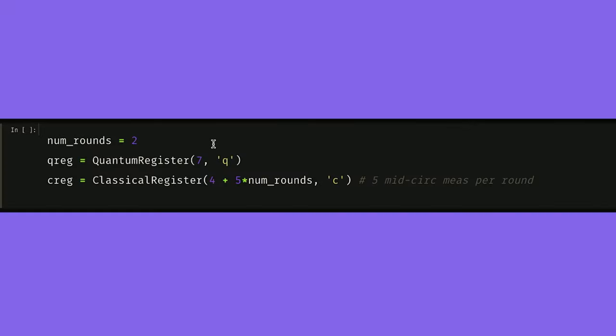Putting it all together, we'll do two rounds of quantum error correction on our seven qubit quantum register. Here, the number of bits in the classical register is going to depend on the number of rounds we're doing because each round has five mid-circuit measurements per round. Mid-circuit measurements are an advanced feature of IBM quantum backends that allow us to measure the quantum states inside of a quantum circuit.